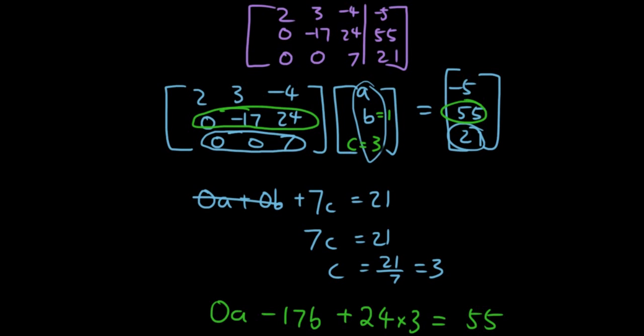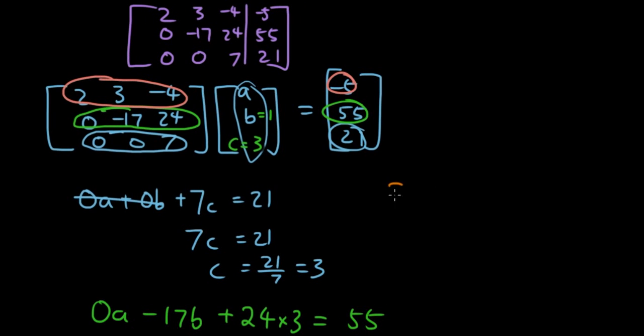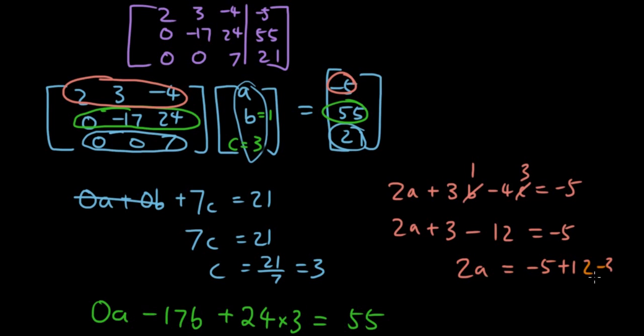And now let's just do the last remaining line. So it's 2, 3, negative 4 times ABC equals negative 5, so let's write it over here, so 2A plus 3B minus 4C equals negative 5. B is equal to 1, C is equal to 3, so 2A plus 3 minus 12 is equal to negative 5, 2A equals negative 5, plus 12 minus 3, 2A equals 4, and A is equal to 2.